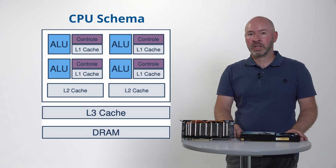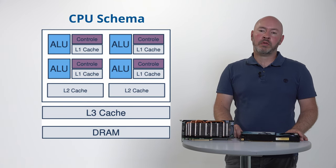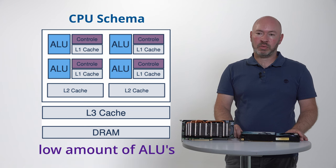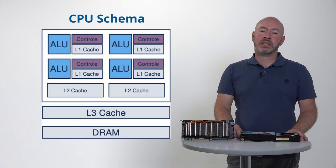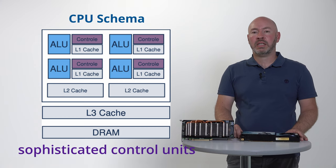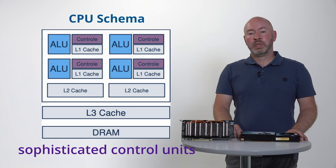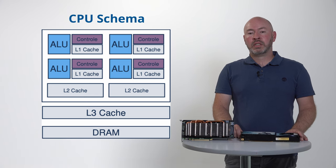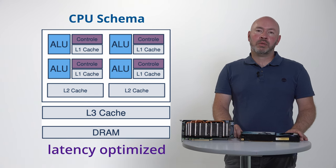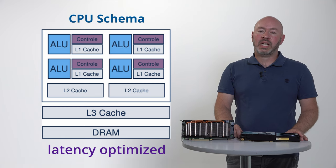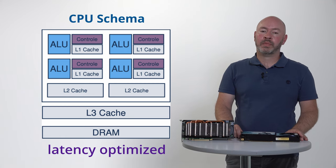It is important to understand some basic facts about the hardware design of a typical CPU or GPU. A CPU has a low amount of Algorithmic Logic Processing Units, or ALUs, which however support a very large instruction set and are thus very versatile in usage. A CPU further features a local L1 and L2 cache, a global L3 cache, and an off-chip DRAM. The whole memory architecture is latency optimized.